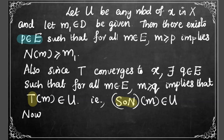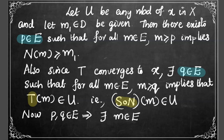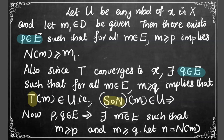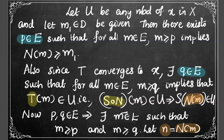Now we have two elements p and q from the directed set E, so there will exist some element m from E such that m follows p and m follows q. Let n = N(m). But we know that s∘N(m) belongs to U, that is, s(N(m)) belongs to U, so replacing N(m) by n, we get s(n) is a member of U.